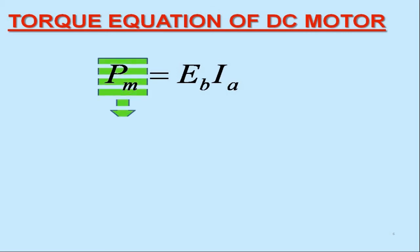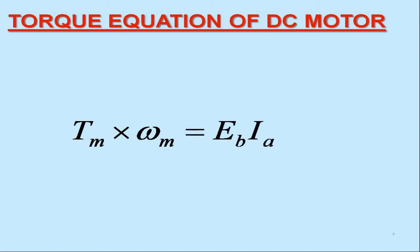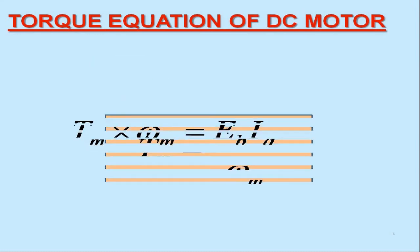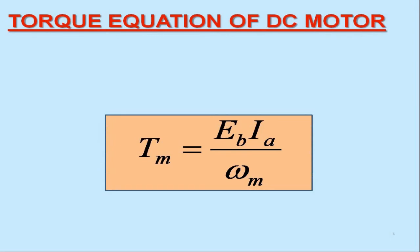Now, PM may further be expressed as the product of mechanical torque produced, Tm, and the angular speed of armature in mechanical radians per second, Omega M. Therefore, Tm times Omega M equals Eb Ia. Thus, the expression for torque is given by Eb Ia over Omega M.